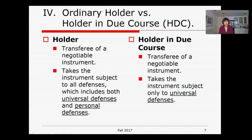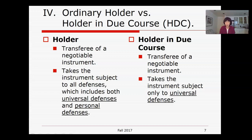If the third party recipient — the transferee — can be a holder in due course under the UCC, they will be more likely to collect because there are fewer defenses available to the obligated party. If you are the transferee of a negotiable instrument, you want to be a holder in due course. An ordinary holder faces both universal and personal defenses, whereas a holder in due course faces only the universal defenses.